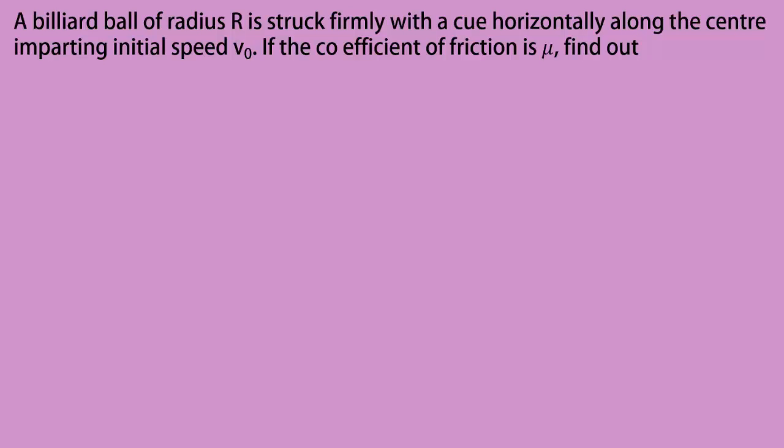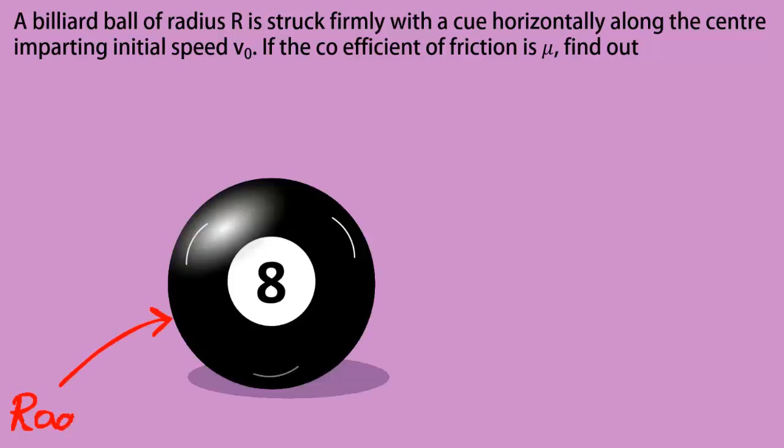I will tackle a classic question on rolling motion. I have a billiard ball of radius r on a rough surface with friction coefficient mu. We consider the static and the kinetic friction coefficient to be the same.